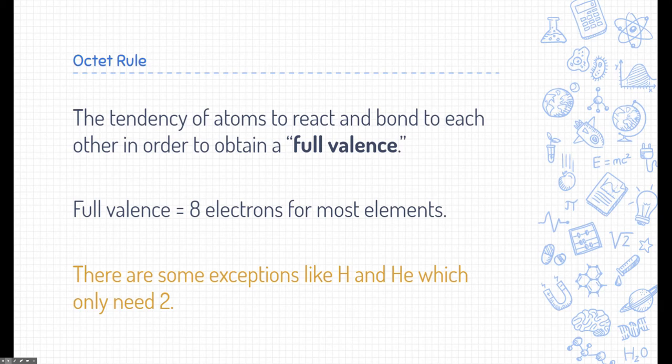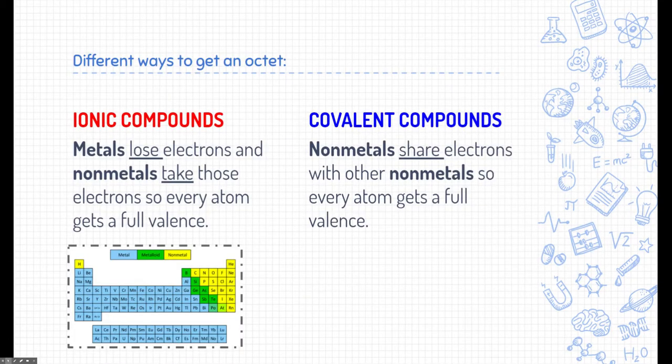There are some exceptions across the periodic table. Two notable ones that you should know are hydrogen and helium. They only need two. The reason for that, if you remember, when we drew Bohr models, the very first ring can only hold two electrons, and hydrogen and helium only have one ring. There are different ways elements get to an octet, and that leads us back to ionic compounds and covalent compounds. So, let's explore those a little bit further.